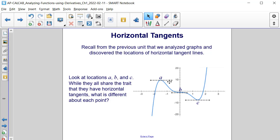Look at locations A, B, and C. While they all share the trait that they have horizontal tangents, what is different about each of these points?